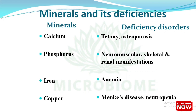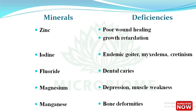Now, minerals and their deficiencies. Calcium deficiency causes tetany and osteoporosis. Phosphorus deficiency causes neuromuscular, skeletal, and renal manifestations. Iron deficiency causes anemia. Copper deficiency causes Menkes disease and neutropenia; the toxicity symptom for copper is Wilson's disease. Zinc deficiency causes poor wound healing and growth retardation. Iodine deficiency causes endemic goiter, myxedema, and cretinism. Fluoride deficiency causes dental caries. Magnesium deficiency causes depression and muscle weakness.